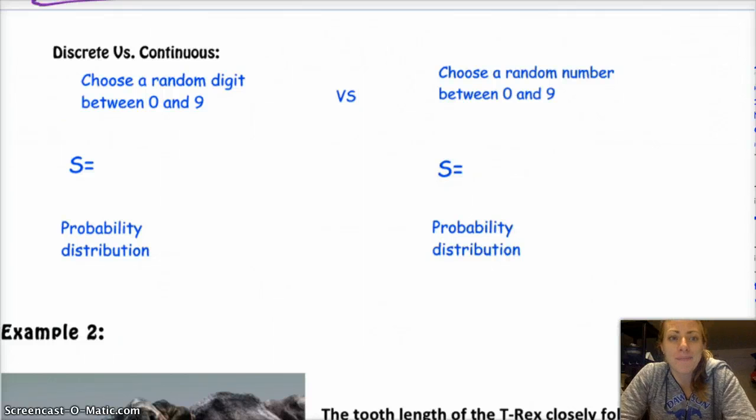So anyways, discrete versus continuous. So my sample space for the discrete one is going to be 0, 1, 2, 3, 4, 5, 6, 7, 8, 9. But for the other one it would be any number between 0 and 9.